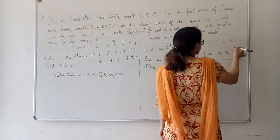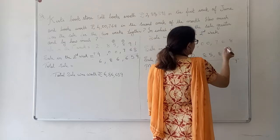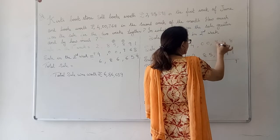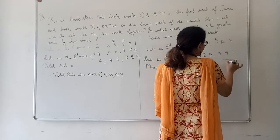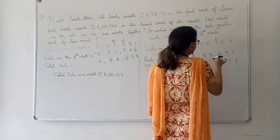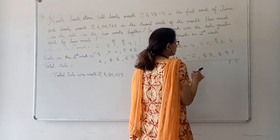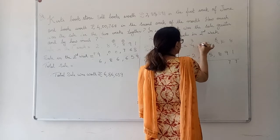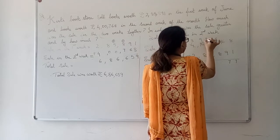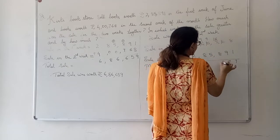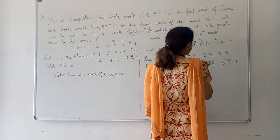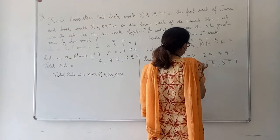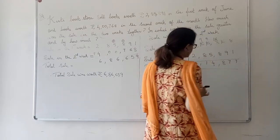Now, 8 minus 1 becomes 7. I cannot subtract 9 from 6. I need to borrow. 16 minus 9 becomes 7. I cannot subtract 8 from 6. I need to borrow. So, 16 minus 8 becomes 8, 6 minus 5 becomes 1, 6 minus 8 becomes, wait I need to borrow. 16 minus 8 becomes 8, 6 minus 5 becomes 1, 3 minus 8, I need to borrow again. Let me recalculate. 16 minus 8 becomes 8, 9 minus 5 becomes 4, 9 minus 8 becomes 1 and 3 minus 2 is 1.